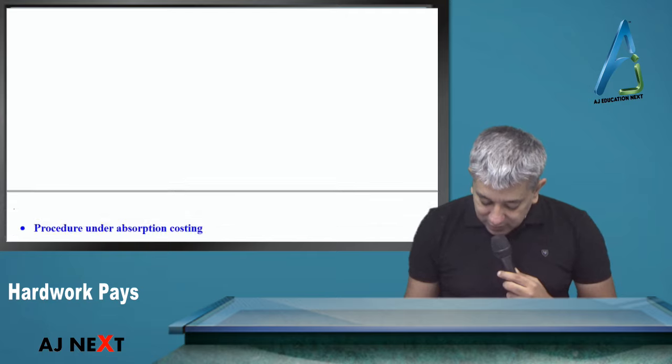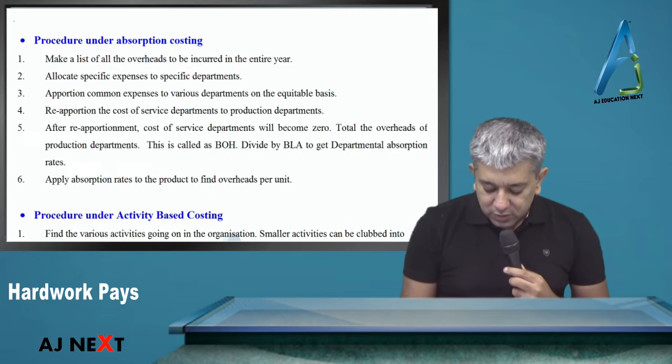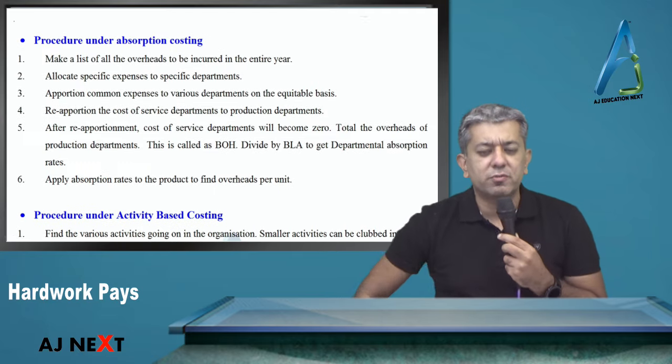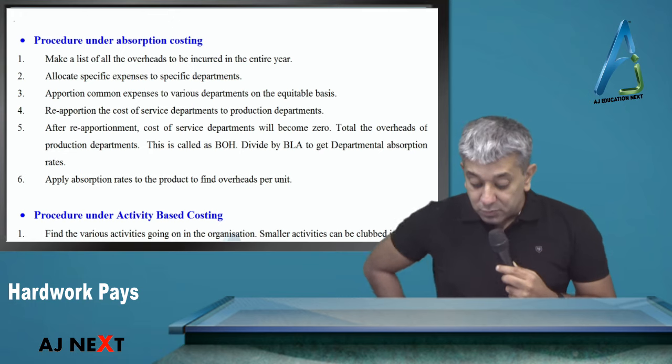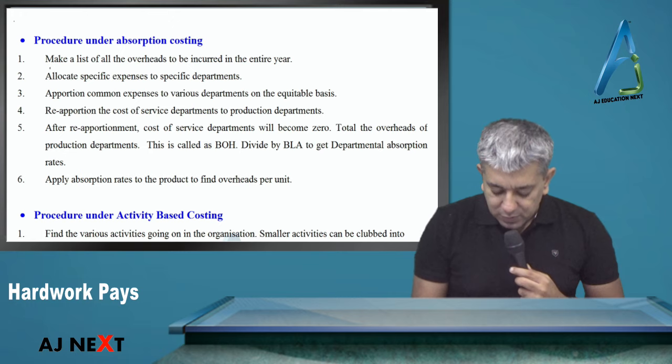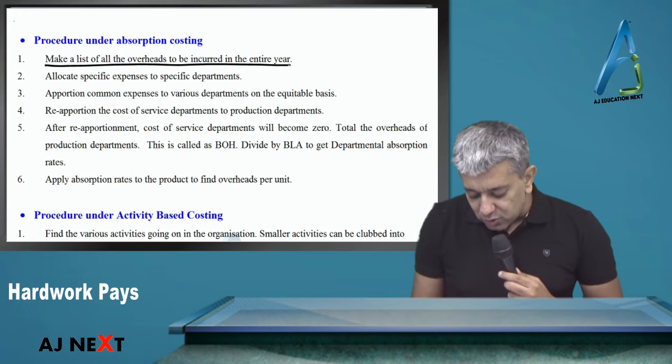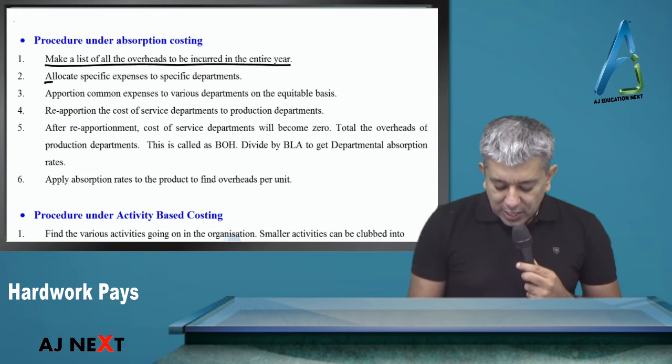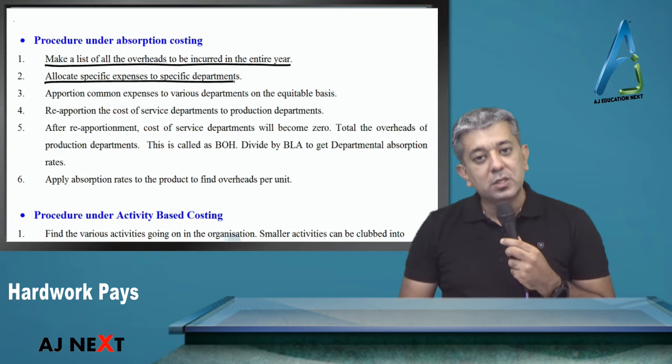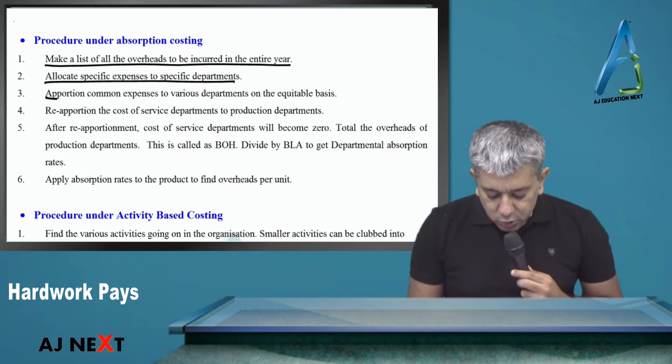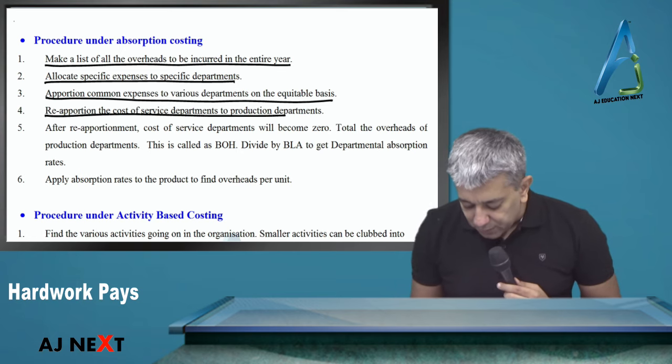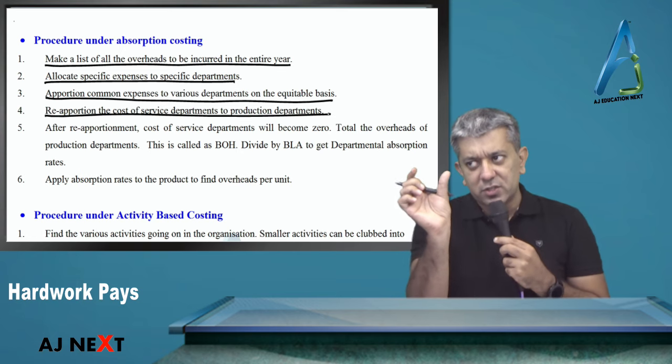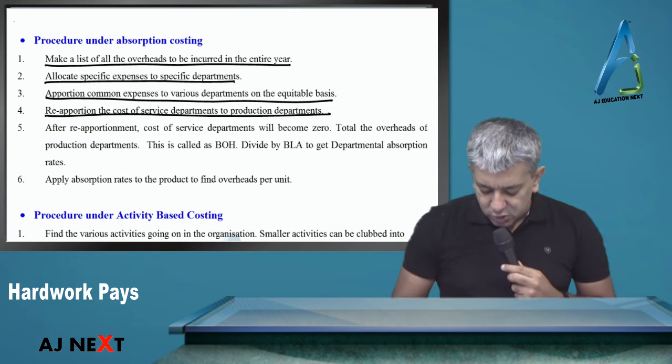When we started Activity-Based Costing, it was a conflict of two things. Until now we followed absorption costing. Now we have started to follow Activity-Based Costing. Let's see how absorption costing works. Make a list of all the overheads, charge specific expenses to specific departments.